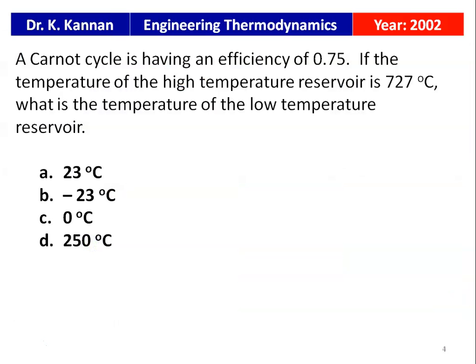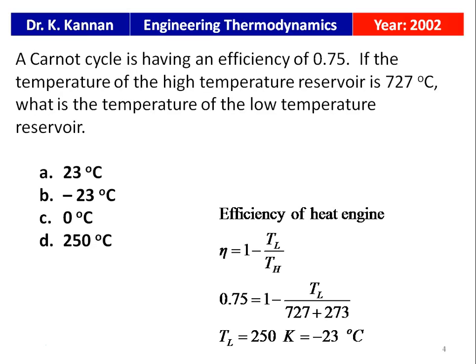This is from the 2002 GATE paper. A Carnot cycle is having an efficiency of 0.75. If the temperature of the high temperature reservoir is 727 degree Celsius, what is the temperature of the low temperature reservoir? The four options are: A) 23°C, B) -23°C, C) 0°C, and D) 250°C.